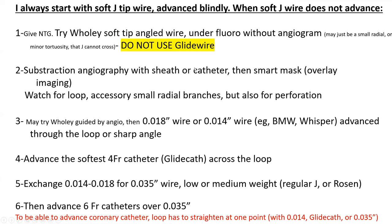So, when the soft J-wire does not advance, give vigorously nitroglycerin to eliminate any spasm. Try a woolly soft-tip angled wire under fluoro without angiography. Do not use glide wire. Woolly might go in that semi-blind approach because the issue may just be a small radial or a minor tortuosity that the J could not cross but the woolly will cross. Now, if woolly does not cross in a semi-blind fashion, then you do subtraction angiography with a smart mask. Then with a smart mask, you try to navigate the loop with a woolly, but more often you'll end up needing an O14-inch wire or O18-inch.